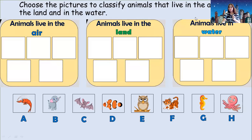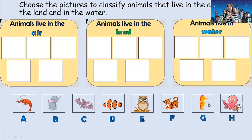Everybody, what do you see in the picture? You see three boxes. The first box — you will see animals that live in the air. The second box — animals that live on land. The third box — animals that live in water. Now let's choose and classify which of the animals live on land, in the air, and in the water. Let's start with picture A — can you name the animal first?